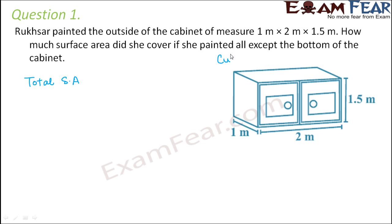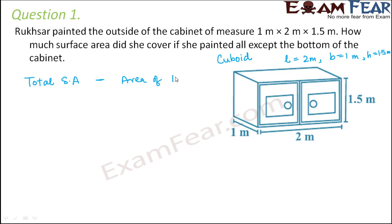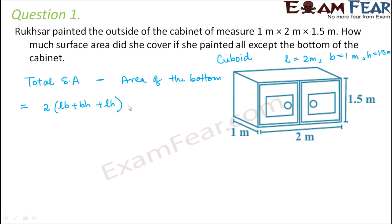The cabinet is in the shape of a cuboid because length, breadth, and height are different. Here, length is 2 meters, breadth is 1 meter, and height is 1.5 meters. We have to find out the total surface area and subtract from that the area of the bottom, which is the base surface. The total surface area of a cuboid is 2(LB + BH + LH).